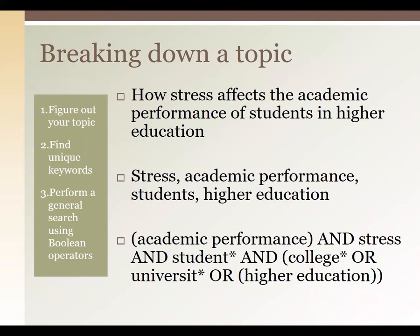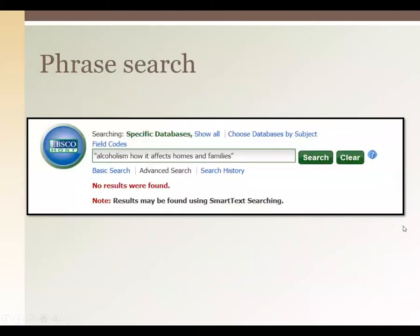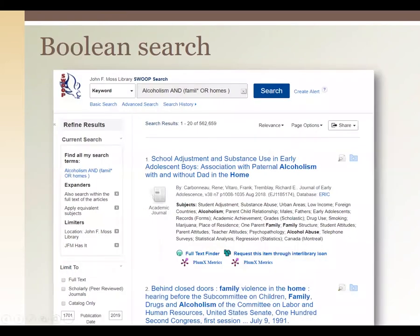The search string looks kind of like a math equation with parentheses — because it basically is. It's a logic equation where you fill in words instead of numbers. If you want to find an exact phrase, you can put it in quotation marks, similar to Google. However, that's not always the best way to search in a database unless you already know the exact title of an article and want to see if we have it. A Boolean search using AND, OR, or NOT is going to be the best approach for Swoop and most library databases.